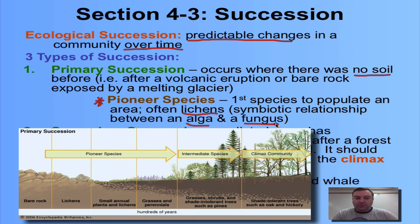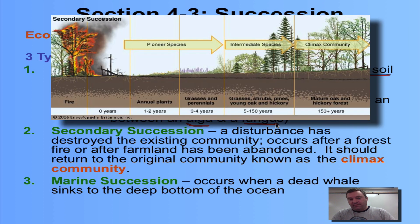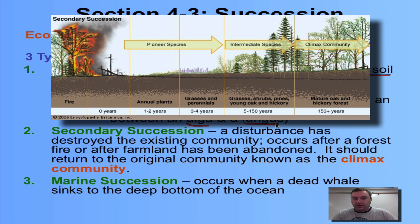In secondary succession, there was already a community there before, but some disturbance — like a hurricane, forest fire, or humans bulldozing a forest — caused the previous community to disappear. Another example could be abandoned farmland, where nobody farms anymore and the forest grows back.